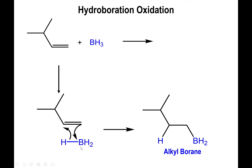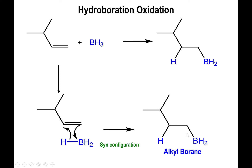Because the process is concerted, this tells us that the boron and the new hydrogen that we've added are both going to be on the same side of the molecule. We call this a syn configuration, because the two things are in the cis configuration — on the same side. Whereas in the anti-configuration, you have things pointing in opposite directions.